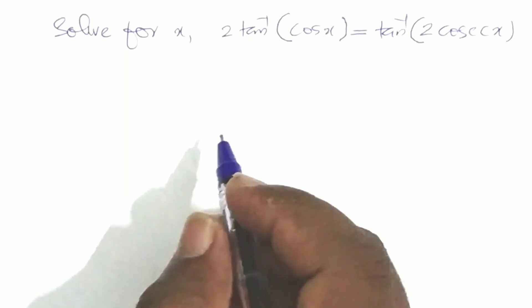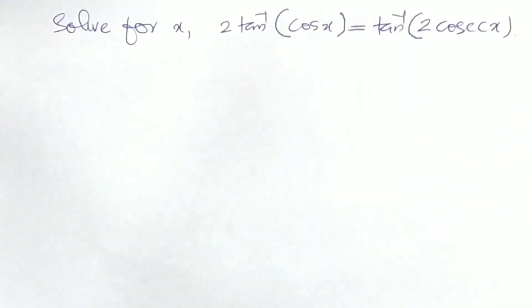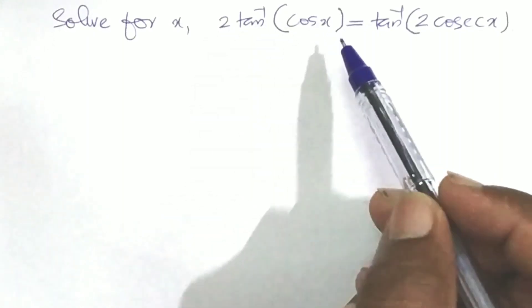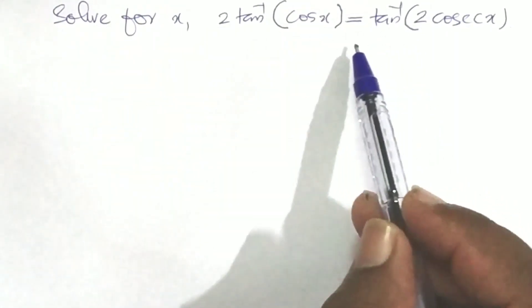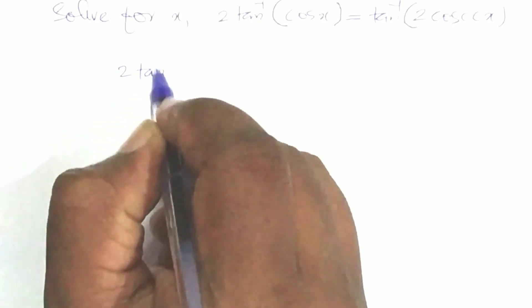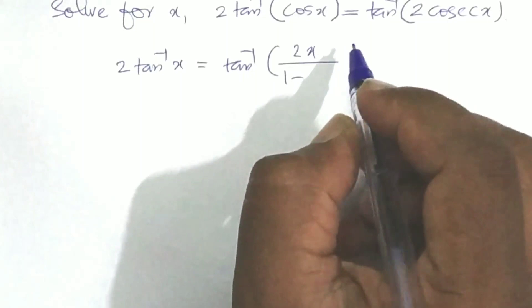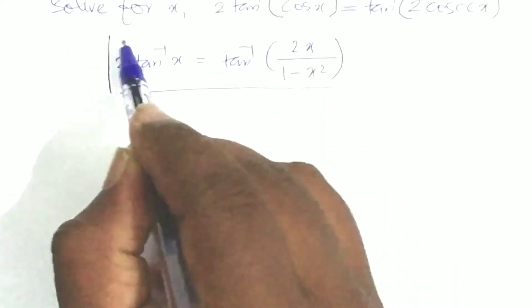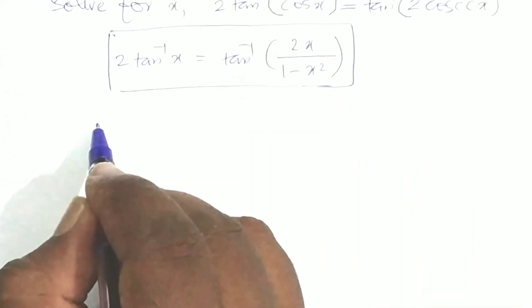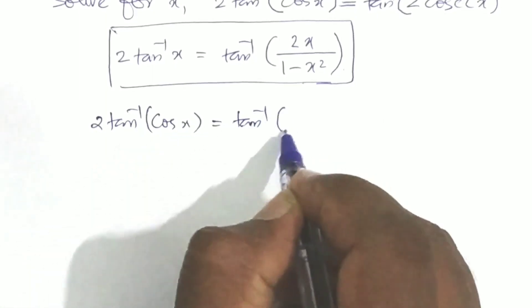The third category: solve for x. The question is: 2 tan inverse(cos x) equals tan inverse(2 cos x). We apply the formula: 2 tan inverse x equals tan inverse of 2x divided by (1 minus x squared). Here x is replaced by cos x.